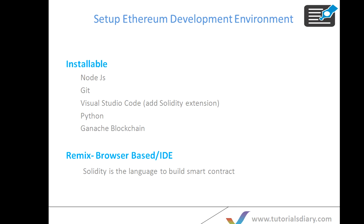In lesson one we will focus only on the installation part. We'll show you how to install Node.js, how to install Git, then Visual Studio Code and how to add the Solidity extension to Visual Studio Code. Then how to install Python and then Ganache Blockchain. Finally we will discuss Remix, which is the IDE used to develop smart contracts for the Ethereum blockchain.